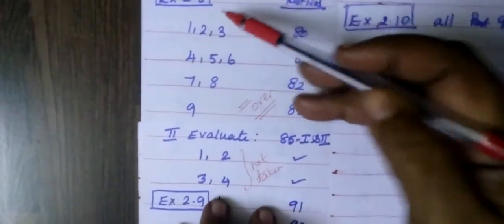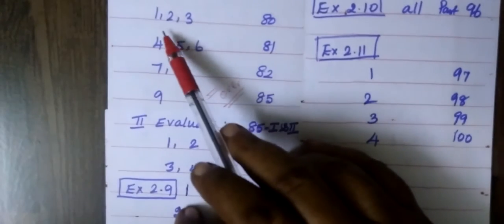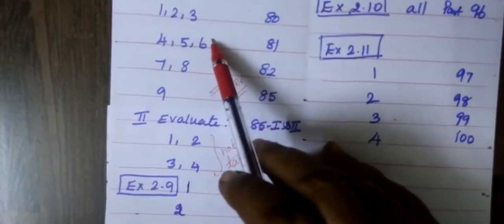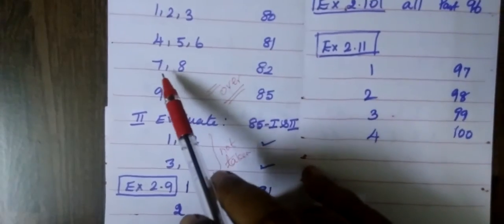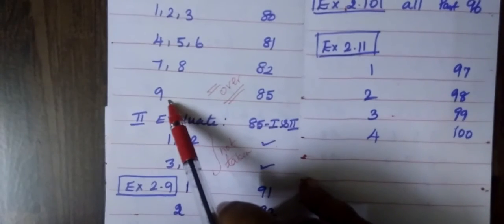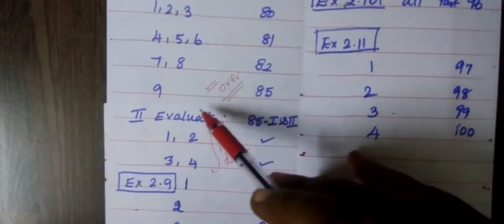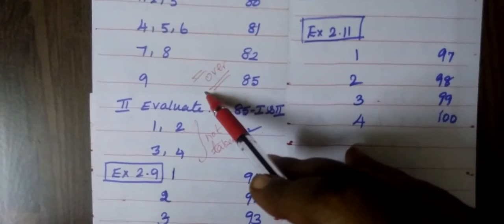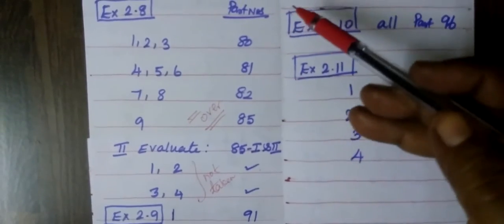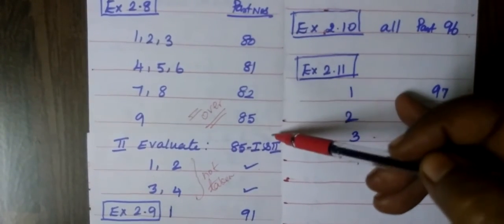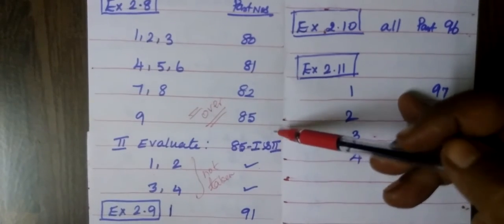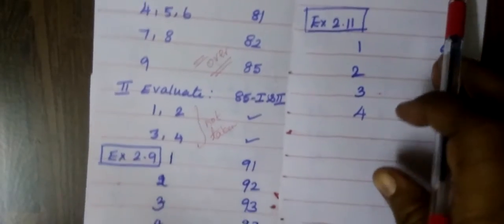Now you see Exercise 2.8, question number 1, 2, 3, 4, 5, 6, then 7, 8, 9. So question number 2.8, 9 questions are there. So this also over. All these links are given in the description box. You can see that.